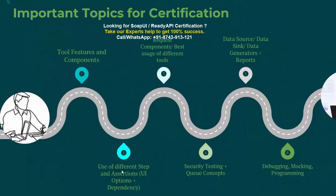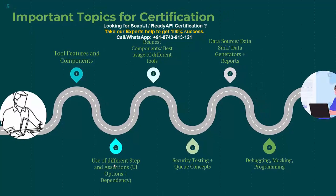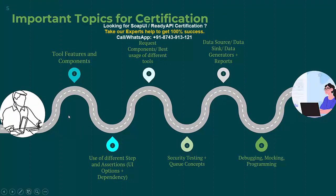Now let me explain the roadmap for this course. Since it's a crash course targeting SOAP UI or ReadyAPI certification, in the next few lectures I will cover different tool features and components — for example, which component is used for reporting, or which component is used for service mocking. Then we will move to different types of assertions, UI options, and dependencies. For instance, if you want to validate data in a JSON response at a specific location, we'll identify the best assertion — XPath, JSON path, or SLA.